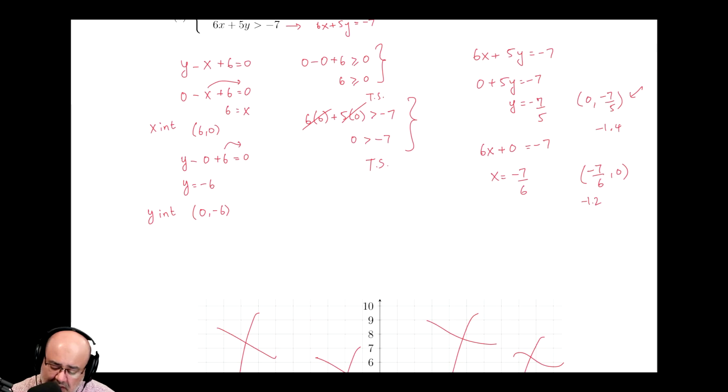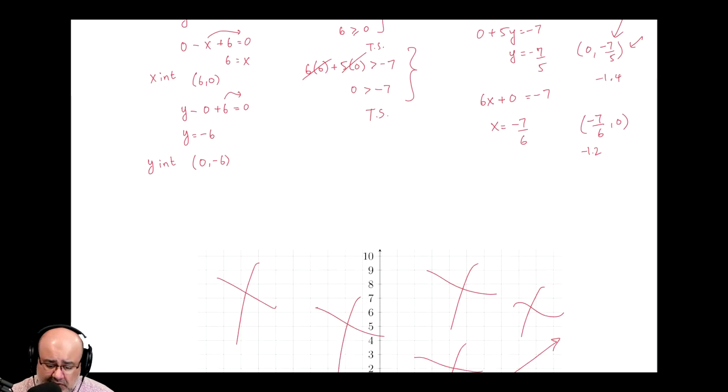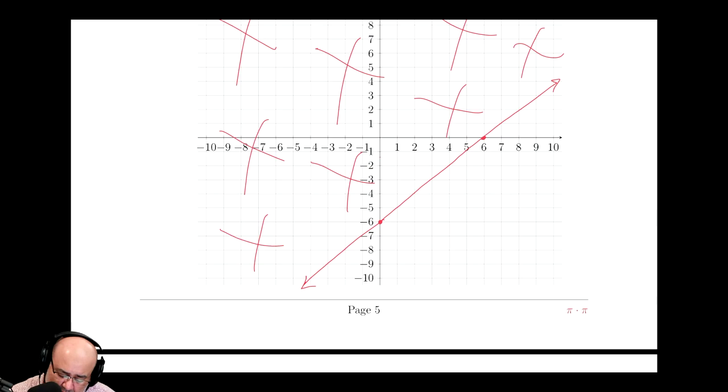For the second one, the intercepts are 0, negative 7 over 5, which is right there. Negative 7 over 5 is negative 1.4. So 0, negative 1.4 would be there, below negative 1 but above the halfway point.